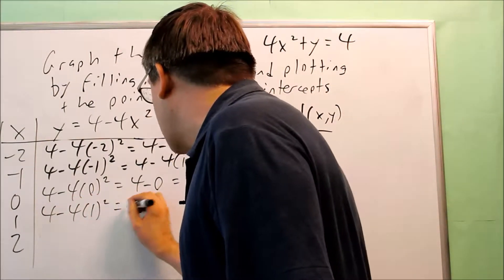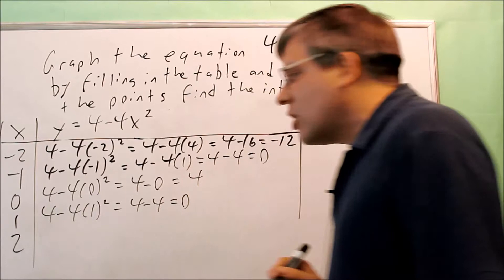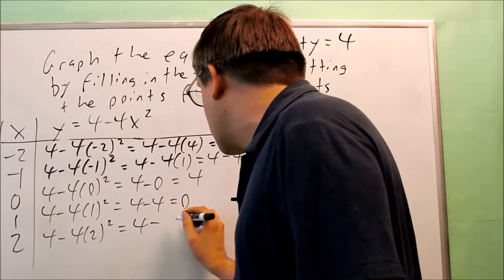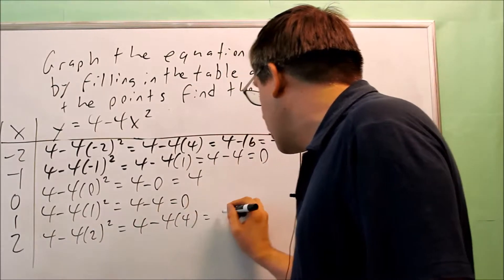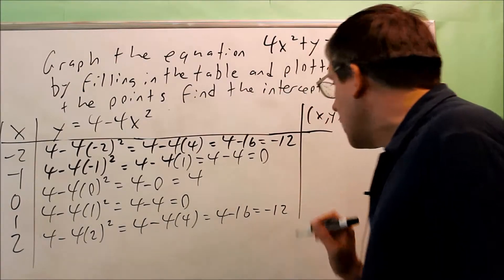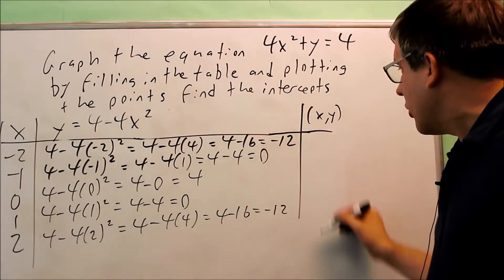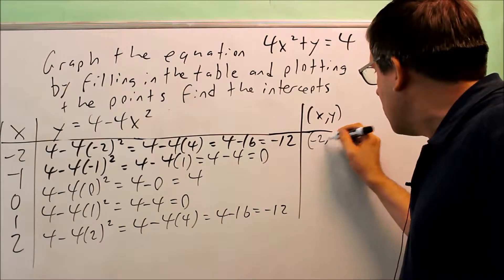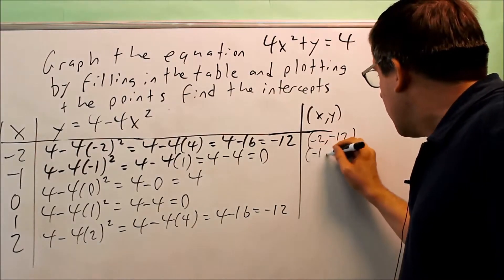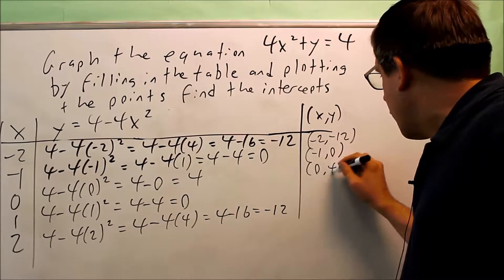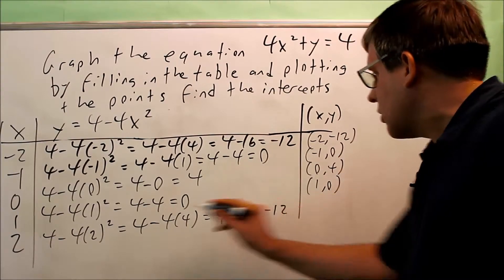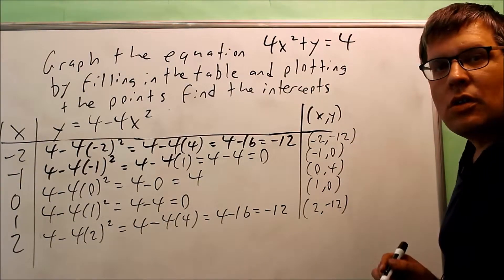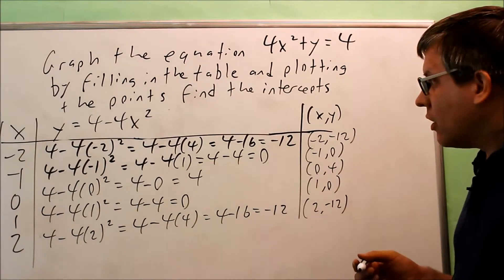For x equals 1: 4 minus 4 times 1 squared is the same as 4 minus 4, which is 0. Then for x equals 2: 4 minus 4 times 4, which is 4 minus 16, giving negative 12. Now that I have all these complete, I'll fill in the column to get my list of points to plot: negative 2 and negative 12; negative 1, 0; 0, 4; 1, 0; and 2, negative 12. These are the points I want to plot to create my curve.